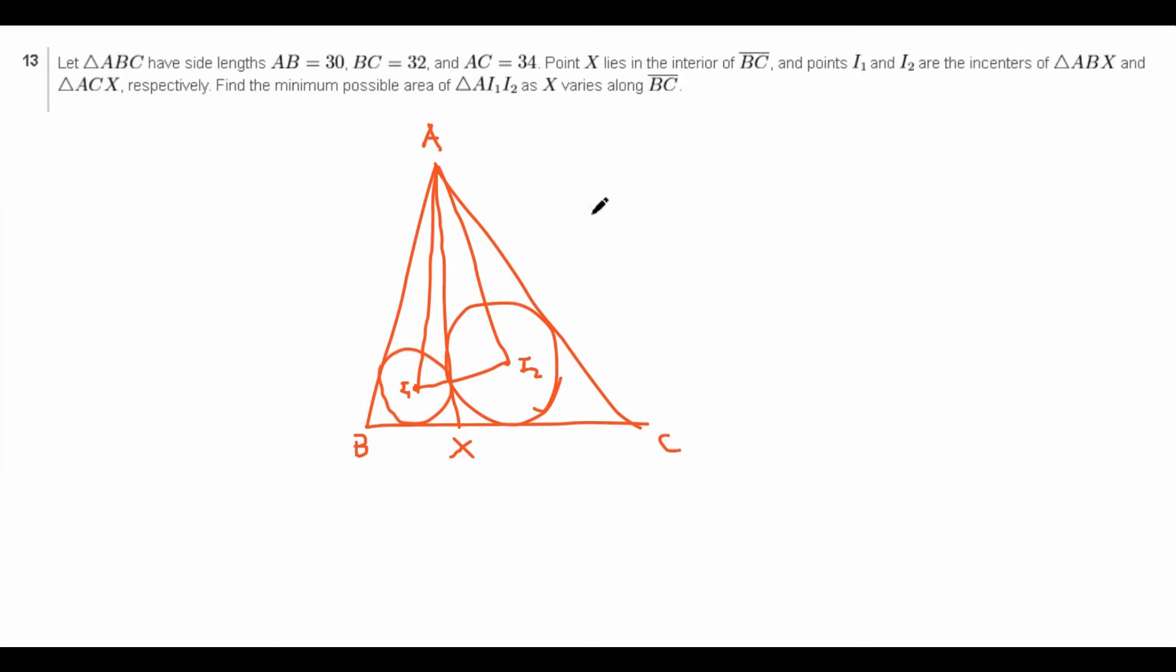So how might we find the area? Well, there's a few ideas for finding the area of a triangle. One idea is you could use base times height. So for example, if you took the height here, and then multiplied by the base, I1, I2, then divided by 2, then you'd find the area. However, if you think about it, not only is the height hard to find, but I1, I2 itself is already pretty hard to find.